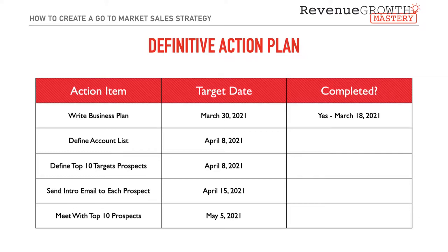Next, create your Definitive Action Plan. We've gone from 30,000 feet with the mission, to 20,000 with objectives, to 10,000 with keys to success, hovering around 5,000 with the territory summary and sales strategy — and now we're at street level. What am I going to get done? When is it to be completed? And has it been completed — if so, when? Build out each next actionable item with a targeted date and a completion stamp so you can track how you're rolling through your action plan.